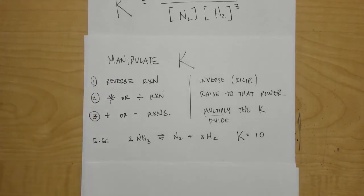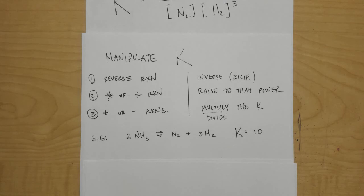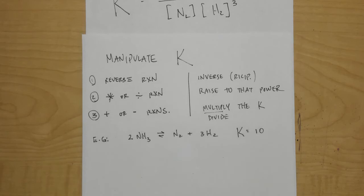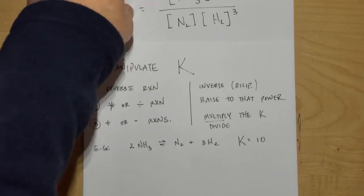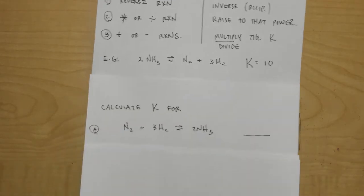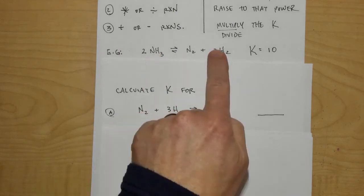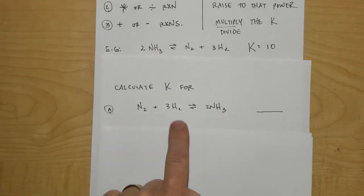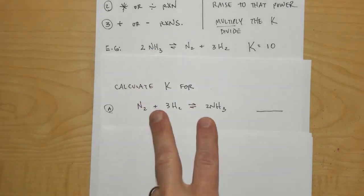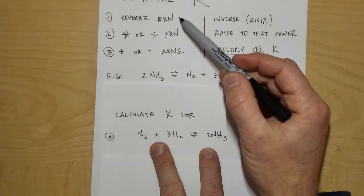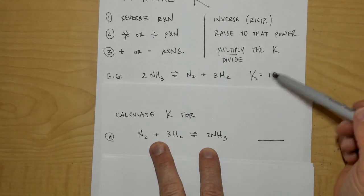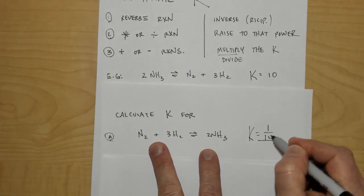Let's do an example. Here's a reaction: 2NH3 → N2 + 3H2, and K equals 10 at this particular temperature. The equilibrium constant doesn't change unless you change the temperature. If we reverse this reaction to get N2 + 3H2 → 2NH3, what is K? Since we reversed it, K becomes the inverse: 1/10 or 0.1. Another beautiful thing about capital K — it has no units. It's unitless, unlike the lowercase k from Chapter 14.